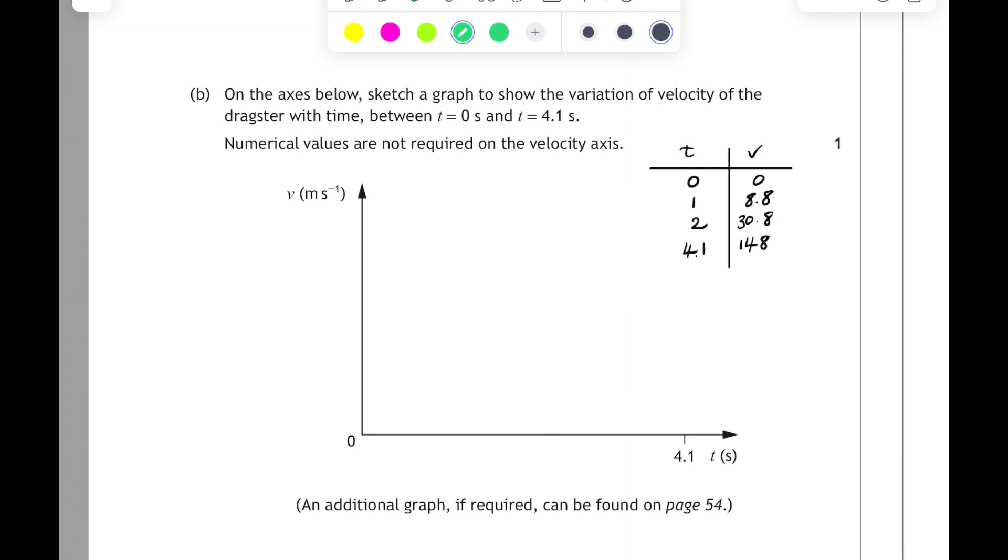So the velocity is increasing at a much greater rate than the time is, so it will be a curve. And remember, we don't have to show any values, numerical values are not required on the velocity axis, but we do have to show the curve up to 4.1 seconds. So let's put a wee dotted line there, and it's going to be an increasing curve, starting from 0, and it must reach the 4.1 on the x-axis. So that's for one mark there. That's quite tricky. I think that's an A mark.